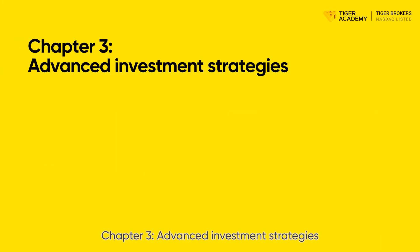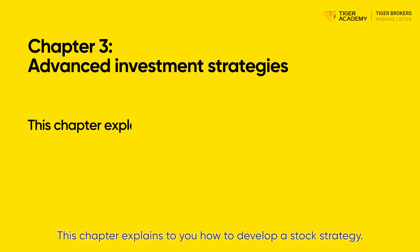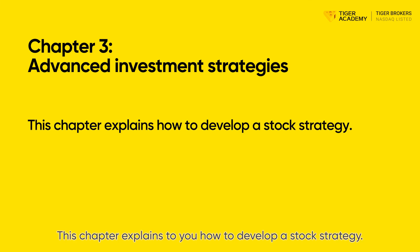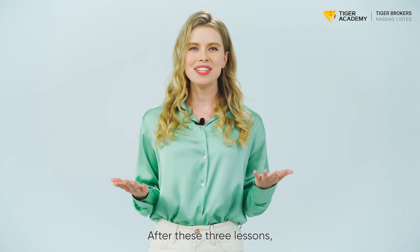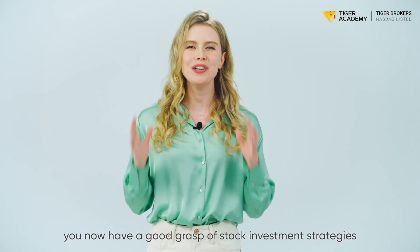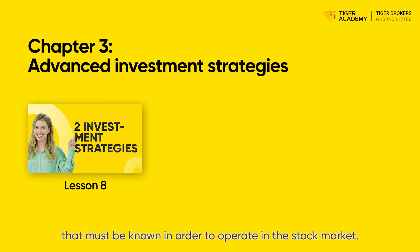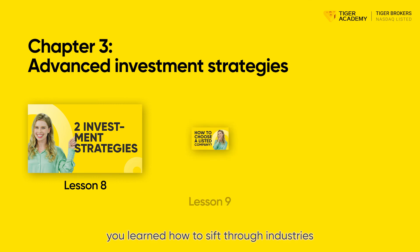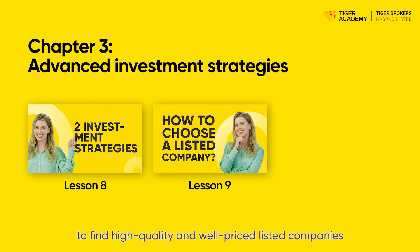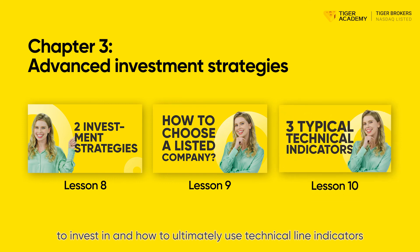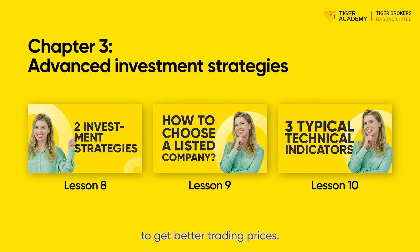Chapter 3: Advanced Investment Strategies. This chapter explains how to develop a stock strategy. After these lessons, you now have a good grasp of stock investment strategies and macro elements such as policy and capital that must be known in order to operate in the stock market. In addition, you learned how to sift through industries to find high-quality and well-priced listed companies to invest in, and how to ultimately use technical line indicators to get better trading prices.